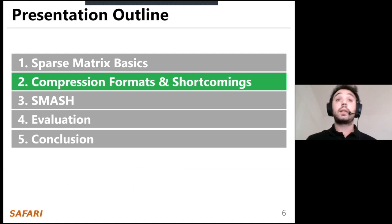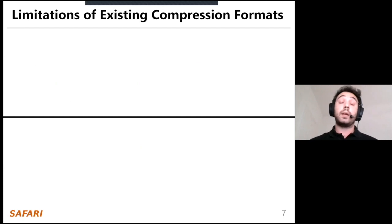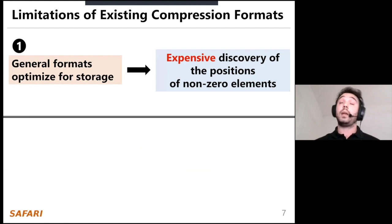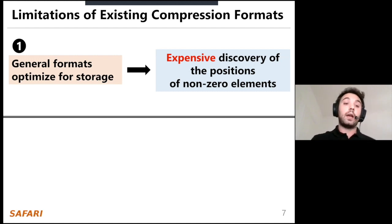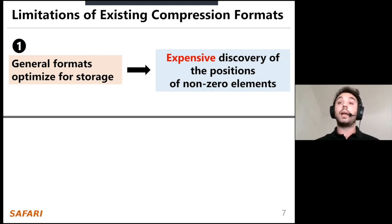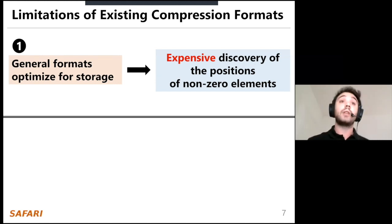We will now discuss existing compression formats and their shortcomings. First, there are general compression formats trying to optimize for low storage and high compression ratios. The problem is that they require expensive discovery of the positions of non-zero elements. Even though they compress the sparse matrix effectively, they require expensive computation to find which elements are non-zero. There is also a second class of formats, which we'll discuss shortly.